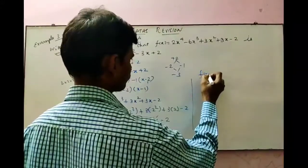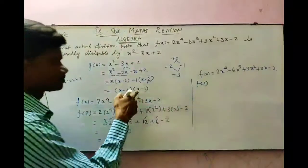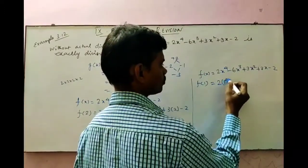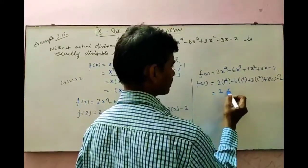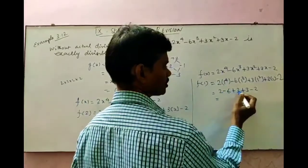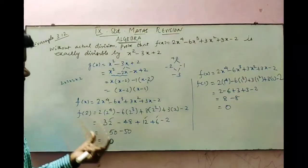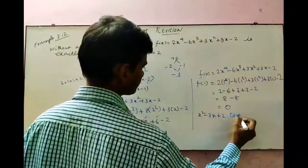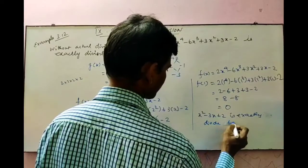Now check with x equals 1 for the factor x minus 1. F of 1 equals 2 times 1 to the power 4 minus 6 times 1 cubed plus 3 times 1 squared plus 3 times 1 minus 2. Since 1 to any power is 1, this gives 2 minus 6 plus 3 plus 3 minus 2. Positive terms: 2 plus 3 plus 3 equals 8. Negative terms: 6 plus 2 equals 8. So 8 minus 8 equals 0.